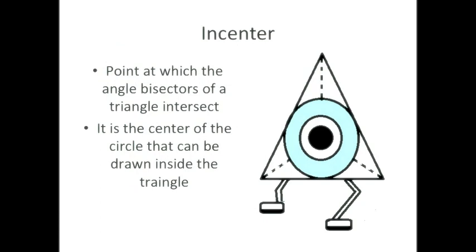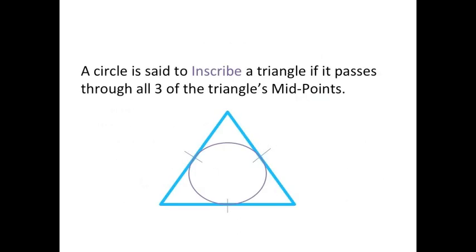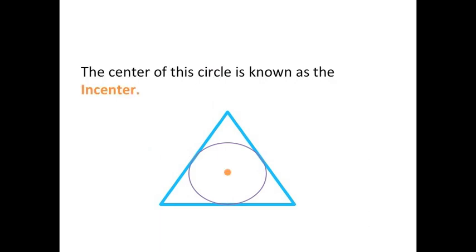The incenter is the final creature we'll be looking for. It is the center of the circle that can be drawn inside the triangle. Here's what we need to know to find our last criminal point of concurrency, the incenter. A circle is said to inscribe a triangle if it passes through all three of the triangle's midpoints. The center of this circle is known as the incenter.